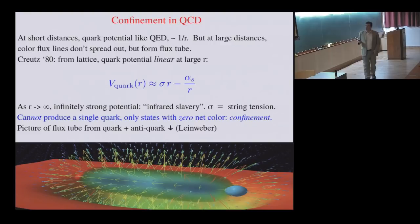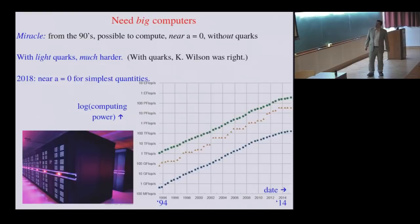So, what you can then do, what people have then done, and many people here, Rashid Gavai and Sharma, one of our hosts, is to use big computers to compute many quantities. Now, there's in fact a miracle that goes on. From the early 90s, it turns out that one can compute near the continuum limit in the theory without quarks. It didn't have to be this way. It's due to a relatively quick transition between strong and weak coupling. But it's something that is true. With quarks, with light quarks, Ken Wilson was right. It's much harder. At present, we can calculate some of the simplest quantities near the continuum limit. But there are many quantities that we cannot. And this is a plot simply of the log of the computing power versus time. And it's a difference between sustained power and peak power. But as we all know, it's been an exponential increase with time.